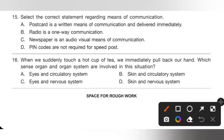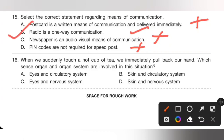Question 15: Select the correct statement regarding means of communication. Option A — postcard is delivered immediately — is incorrect. Option B — radio is a one-way communication — is the correct statement. Option C — newspaper is an audio-visual means of communication — is incorrect, as it is a visual means. Option D — PIN codes are not required for speed post — is also incorrect. Option B is the correct answer.